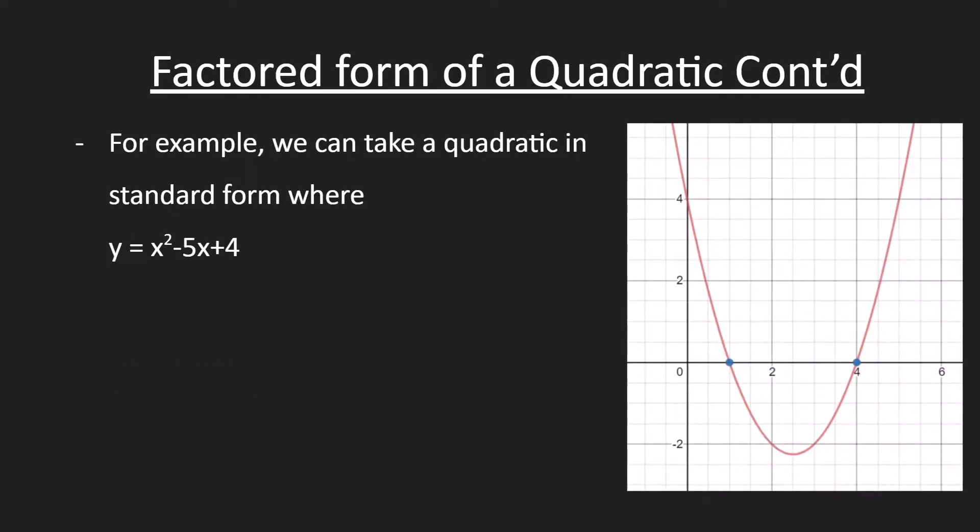We can take a look at an example. Here, y equals x squared minus 5x plus 4. We can factor this, and we get y equals x minus 4 times x minus 1.